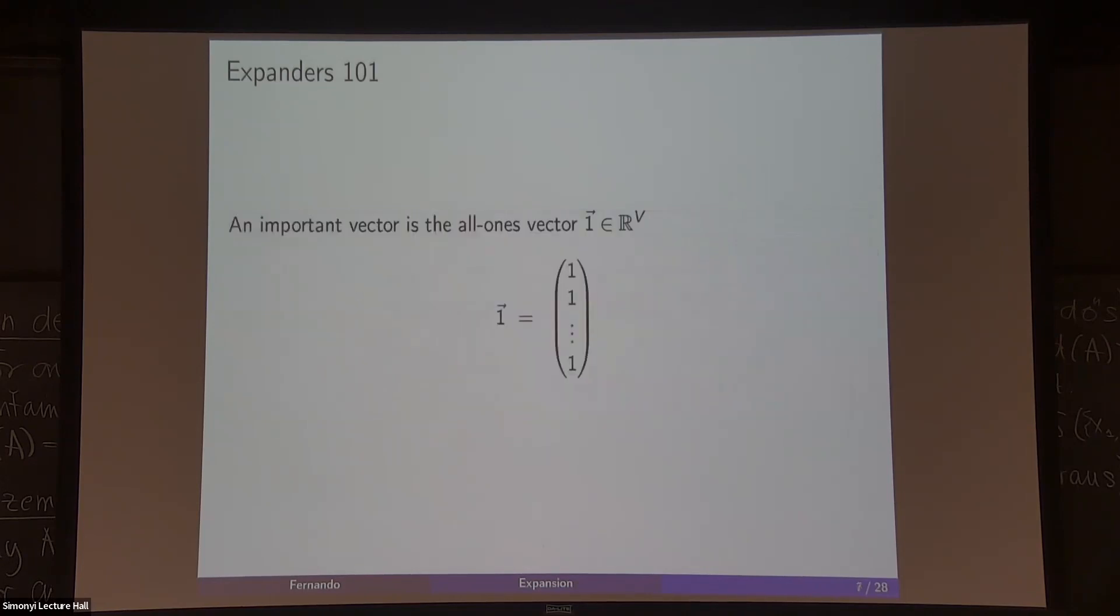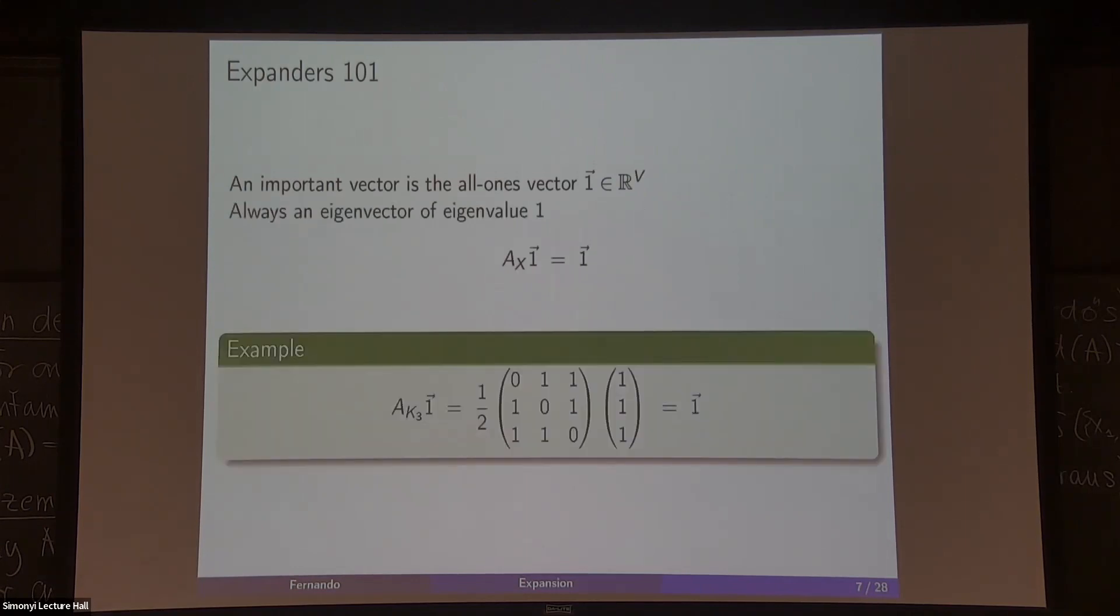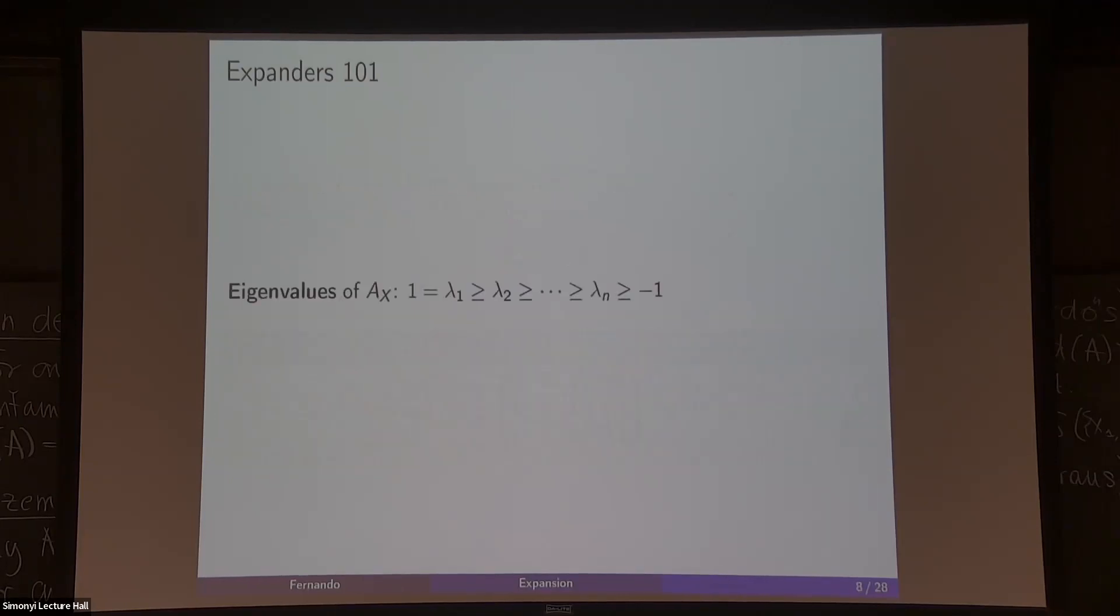To address that, let's consider, since we're playing with regular graphs, a very important direction for us is the all ones direction, because it's always an eigenvector of eigenvalue one of this normalized adjacency matrix. For example, if you take our triangle and apply to the all ones vector, you get the all ones vector with eigenvalue one. We have this real symmetric matrix. It has real eigenvalues. The rows sum to one, it's a probability distribution, and we know that the eigenvalues are between one and minus one. We know that one is always realized.